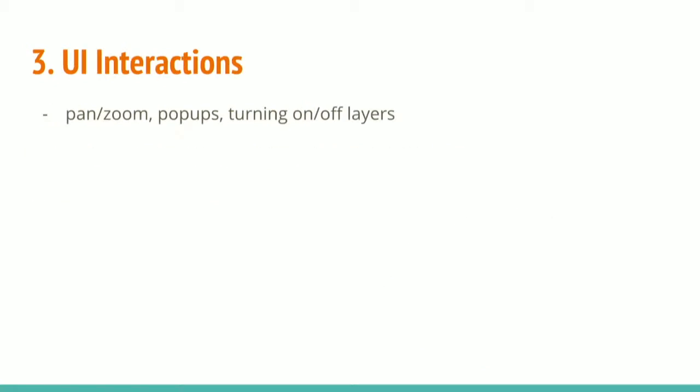UI interactions are the third component. Everybody has zoomed in on a map, panned around, clicked on things and had popups appear. These make a big difference when you're building your map — what kind of interactions you allow and how you build them in. Another thing you'll see is being able to turn data layers on and off. You can have multiple layers and let people turn them on and off to see how they interact.